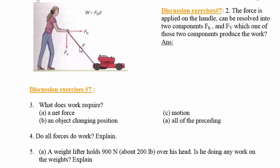You can replace the force vector with two vectors: one horizontal (F_H) and one vertical (F_V). The question is which component causes the work. The answer is the force in the direction of motion. Since the lawnmower moves in the horizontal direction, the horizontal force is the one performing the work, and to calculate the work you multiply the horizontal force by the distance.